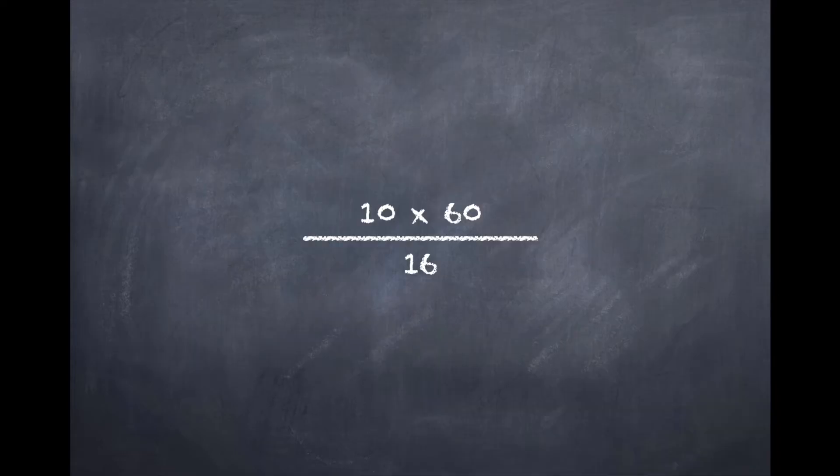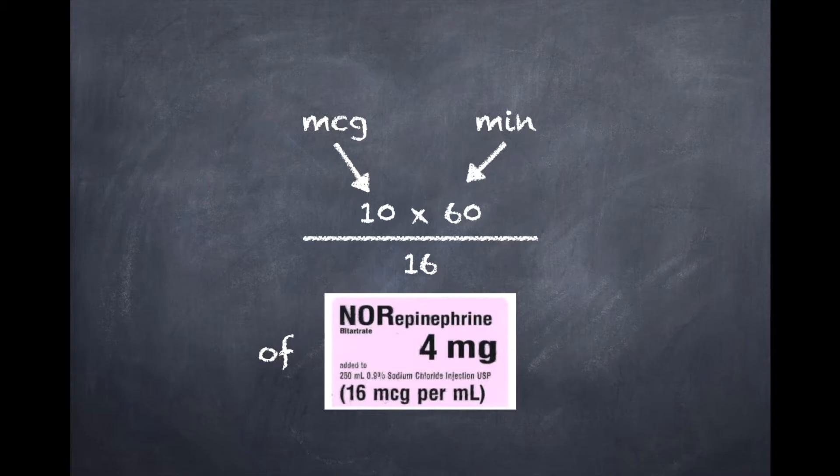So again, if you're having trouble remembering how these go, it's just usually how it's said. 10 mics per minute of norepinephrine. And there's your concentration down there on the bottom.